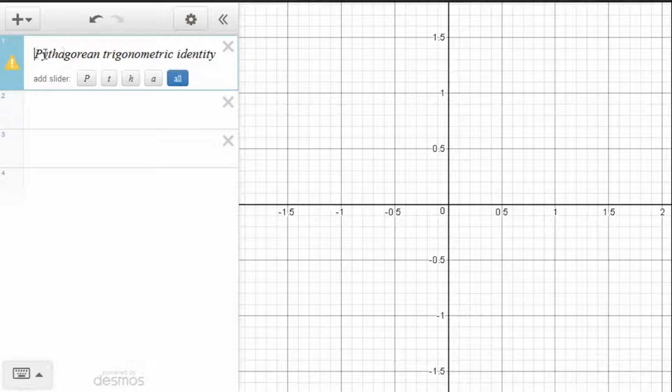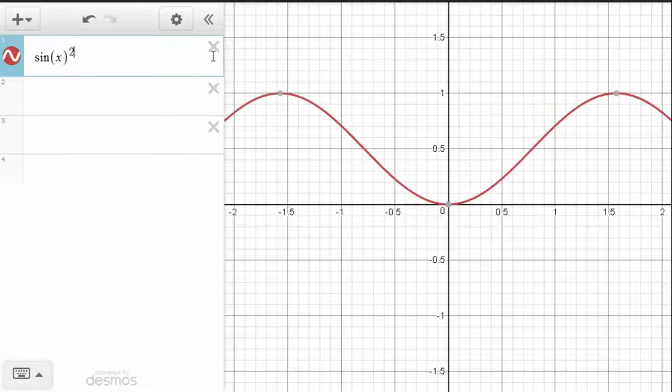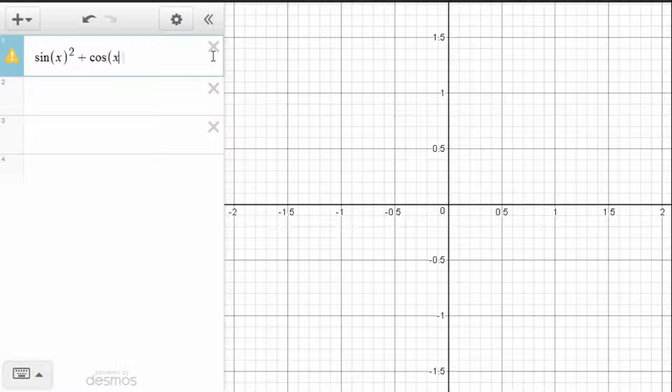In this video, we want to do a visualization of the Pythagorean trigonometric identity, a quick visualization. In other words, we want to show the truth in sine of x squared plus cosine of x squared being equal to 1.